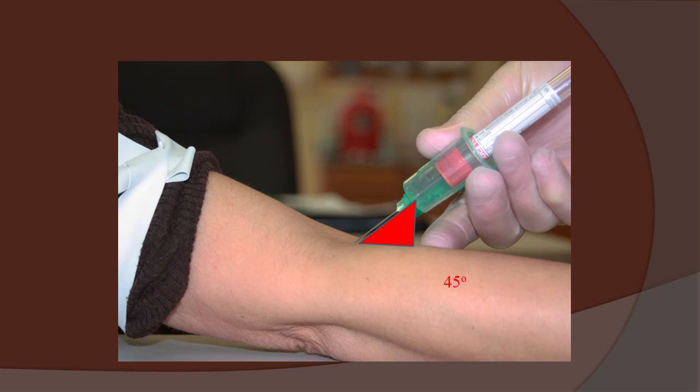Here we see an excessive angle of insertion of about 45 degrees. When the needle enters the vein at this angle, not only are we risking an unsuccessful venipuncture, but we're also risking involving the delicate underlying structures when we go through the vein.